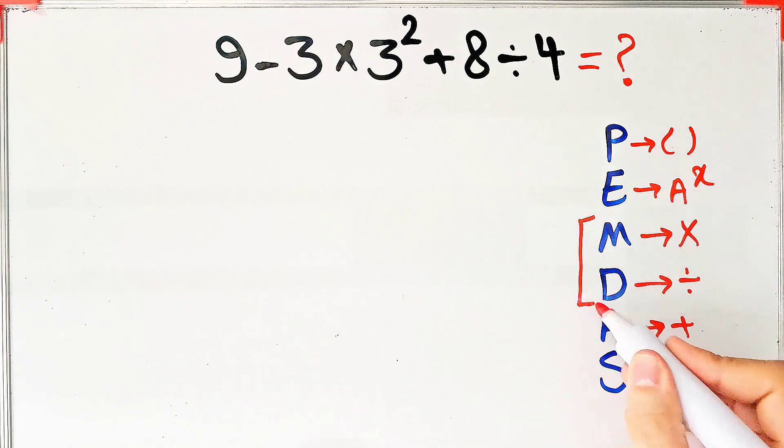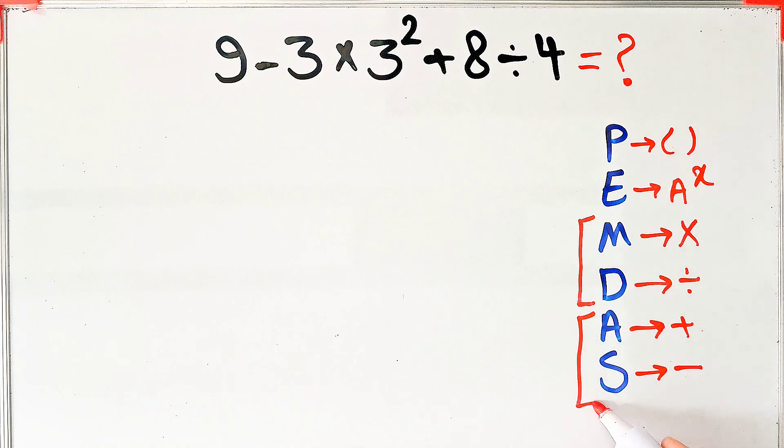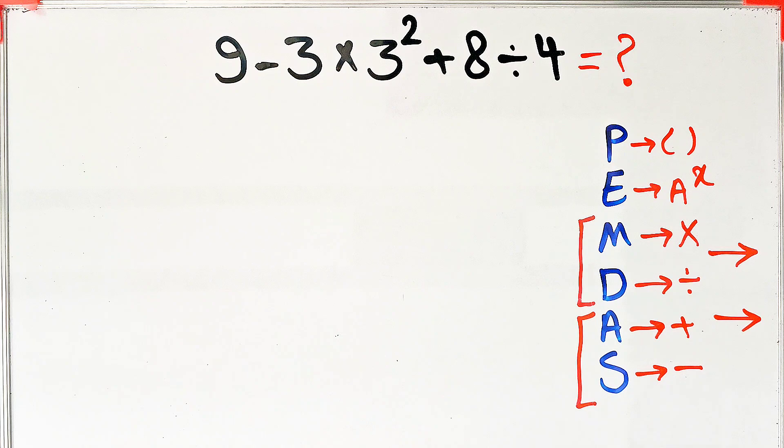Don't forget, multiplication and division have the same level of priority, also addition and subtraction have the same level of priority. When we have both in an expression, we start from the left and simplify.